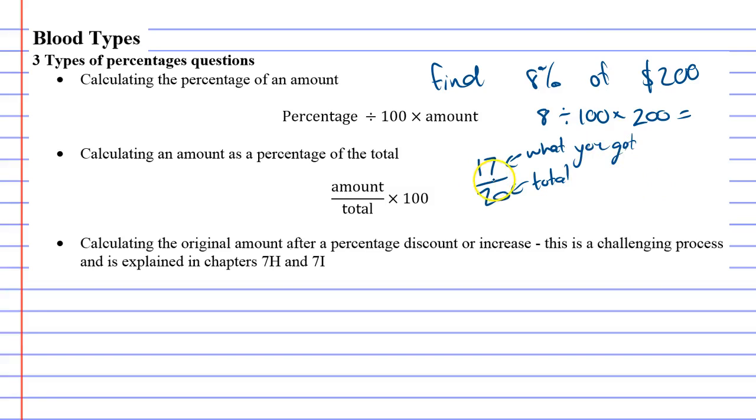And let's say you want to convert this to a percentage, and all you really need to do is take your fraction and multiply it by 100. So if I go 17 over 20, or 17 divided by 20, and multiply that by 100, I get 85. So this is the equivalent of 85%.